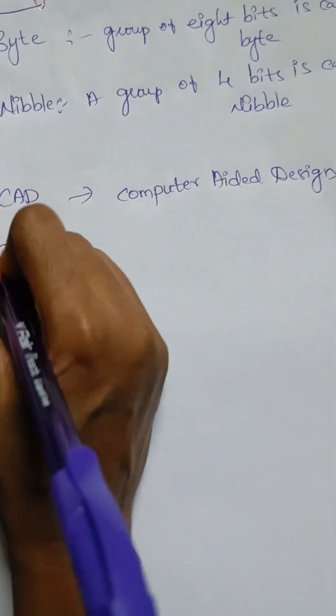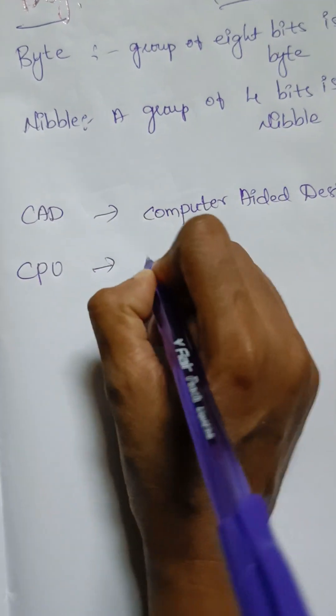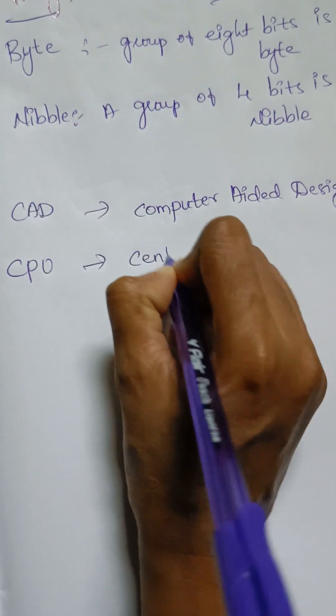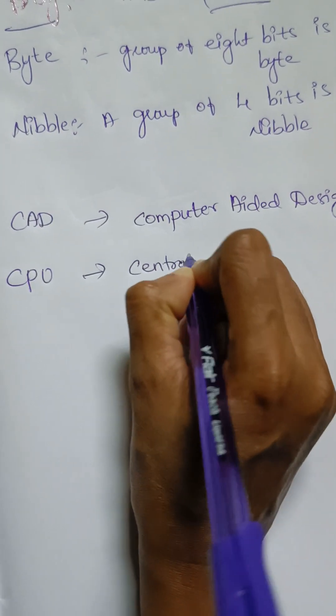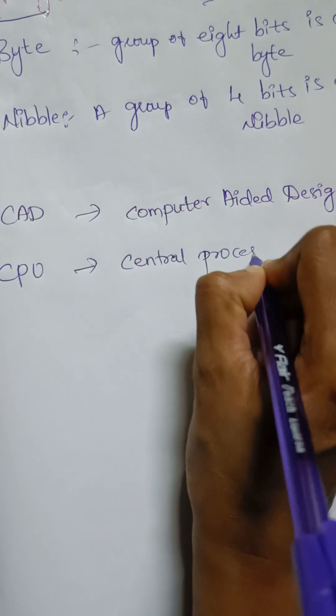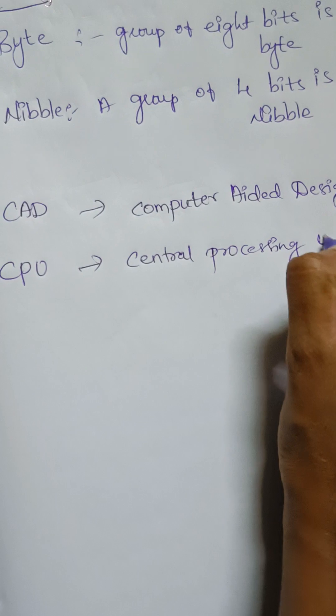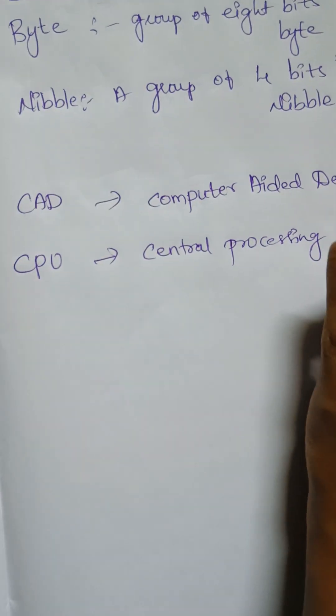The next one is CPU. Everybody knows this answer — that is central processing unit.